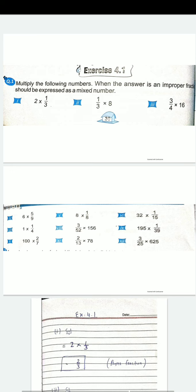Improper fraction میں numerator denominator سے بڑا ہو جاتا ہے جو math کے لئے بالکل صحیح نہیں ہے۔ Math چاہتا ہے کہ denominator بڑا ہو اور numerator چھوٹا ہو۔ تو جب بھی improper fraction والی form بن جاتی ہے تو ہم اس کو mixed number والی form میں convert کرتے ہیں۔ آئیے exercise 4.1 کے کچھ سوالات کرتے ہیں — کچھ سوال میں کروں گا، کچھ آپ لوگ خود گھر سے کرو گے۔